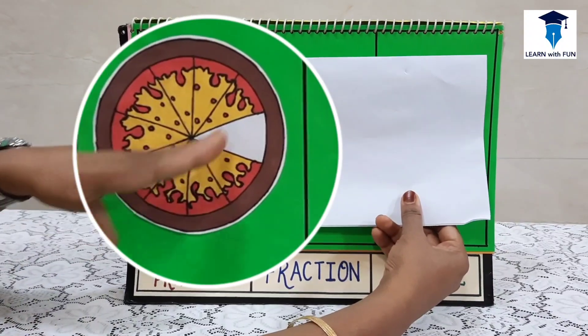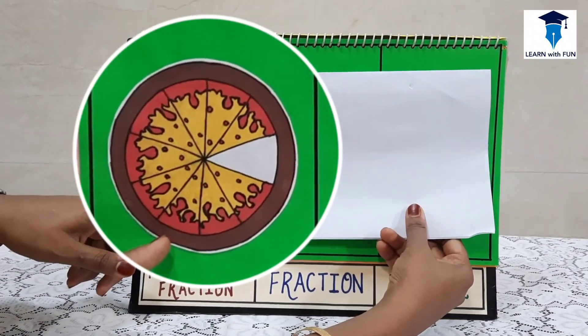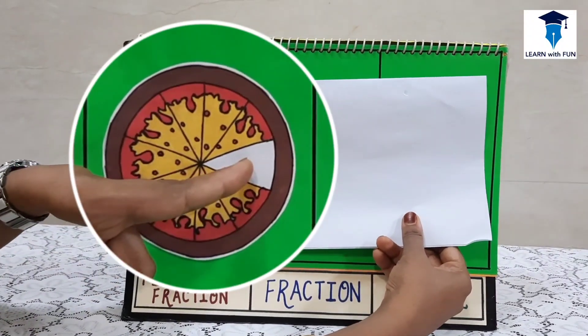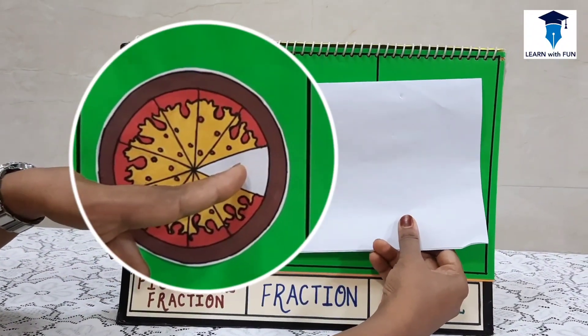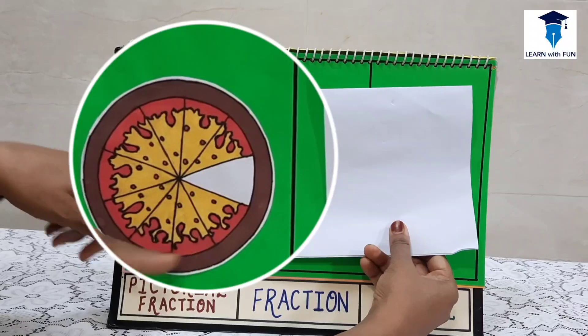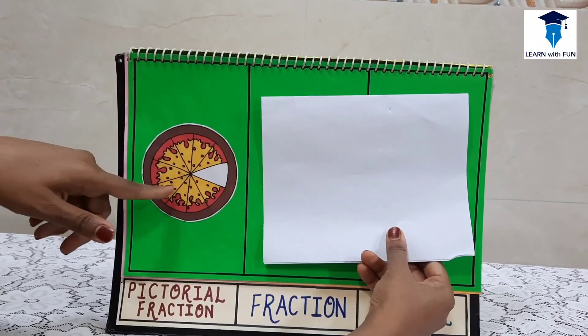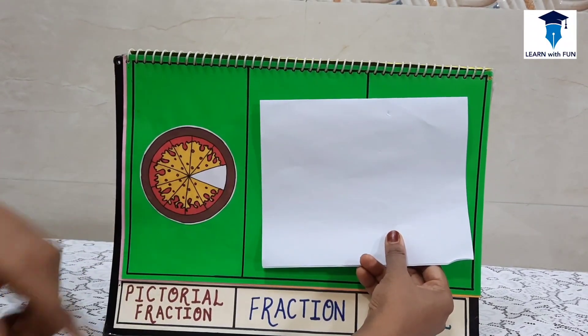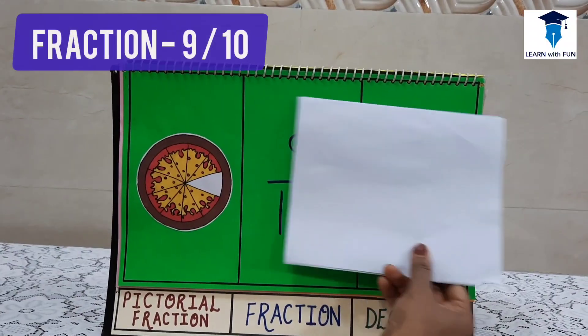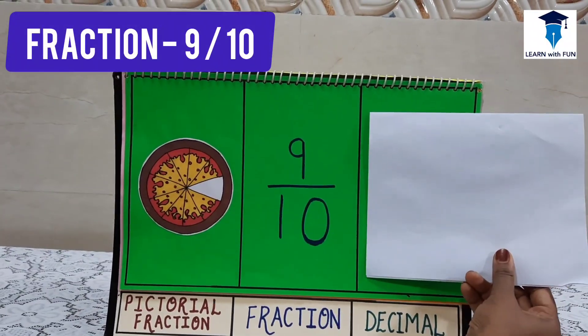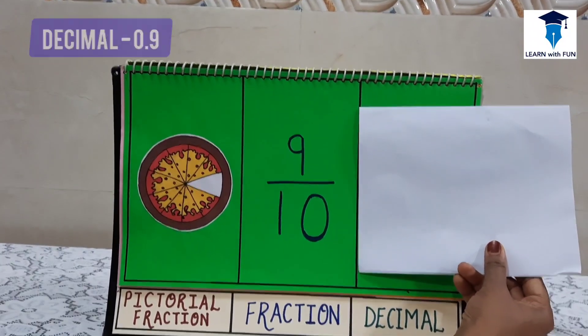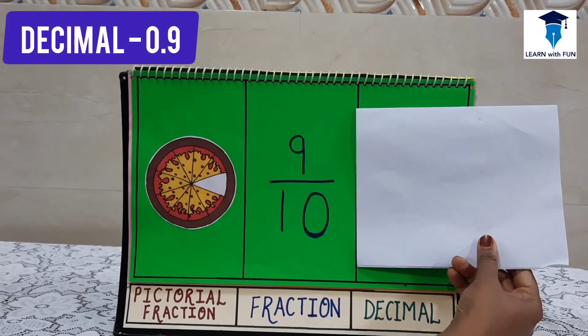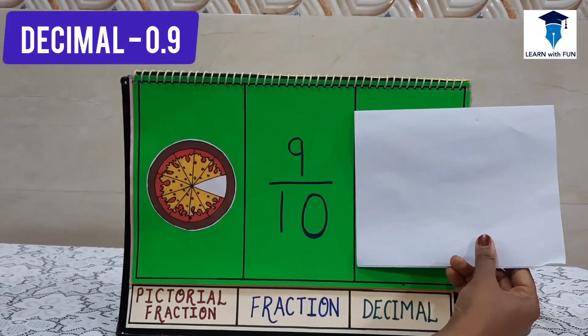Out of 10 pieces, one piece is eaten and 9 pieces are still left. So in fraction form it will be 9 upon 10, and the decimal form will be 0.9.